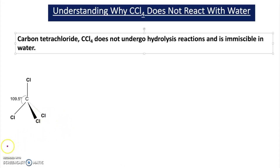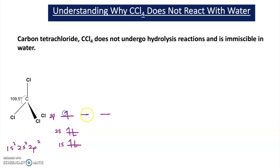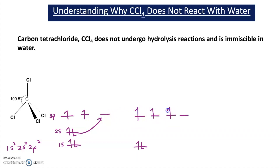Now let's look at the reason why carbon tetrachloride does not react with water. The electron configuration of carbon is 1s², 2s², 2p². Writing this to show different orbital energies: in the first shell we have 2 electrons; in the 2s we have 2 electrons; and in the 2p orbitals we have 2 electrons. Carbon has to have 4 bonds, so electrons are rearranged — one of the 2s electrons is promoted to the empty 2p orbital, creating 4 new sp3 orbitals all the same in energy.